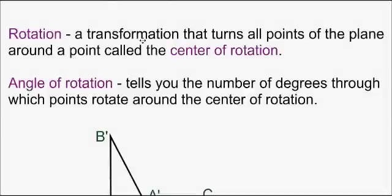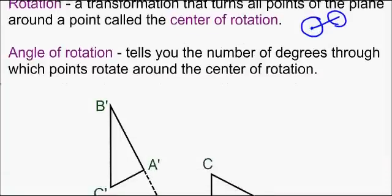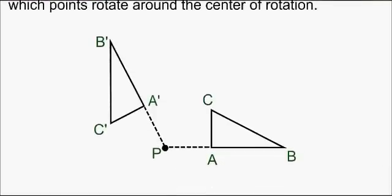A rotation is a transformation that turns all points of the plane around a point called the center of rotation. You could think of the tire on a car rotating about the center — it rotates on the axle that the tires are on. And the angle of rotation tells you the number of degrees through which points rotate around the center of rotation.